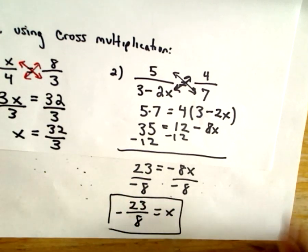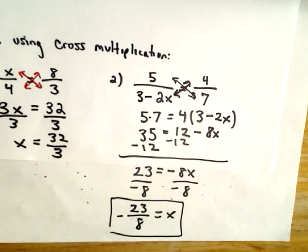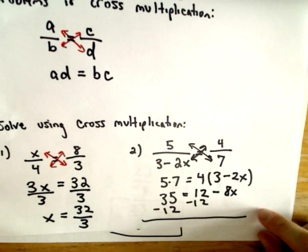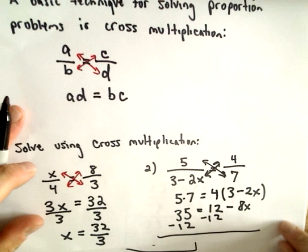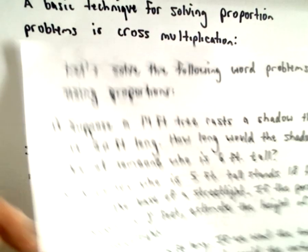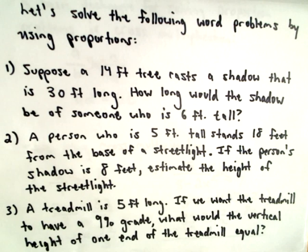So again, in this case, when we do our cross multiplication, we're just getting linear equations. You could get something different. But again, the basic idea is you can just use this cross multiplication to help you get rid of the fractions, and then you can proceed from there. So in my next video, I'm going to start doing three word problems. So here they are, you can take a quick glance at them. And we'll use proportions to solve these next few problems.